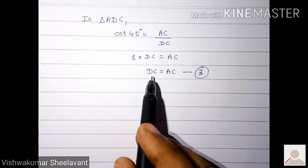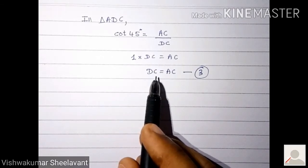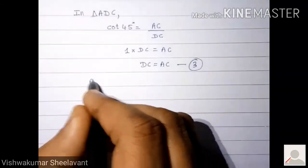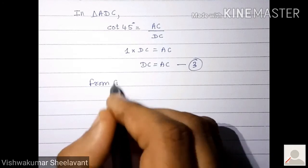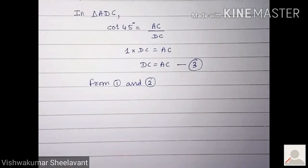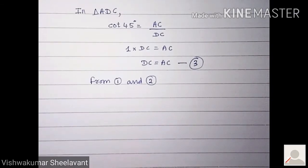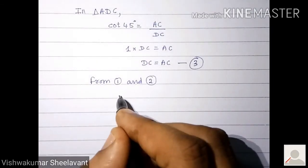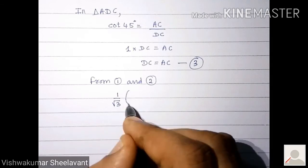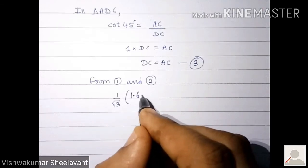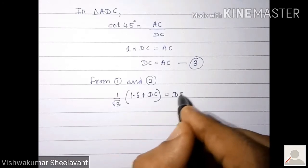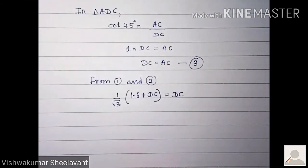Now in place of AC we can substitute DC in equation 2. So we can write from equations 2 and 3: 1 by root 3 into the bracket 1.6 plus DC equals DC.